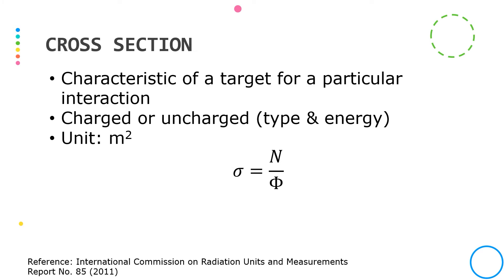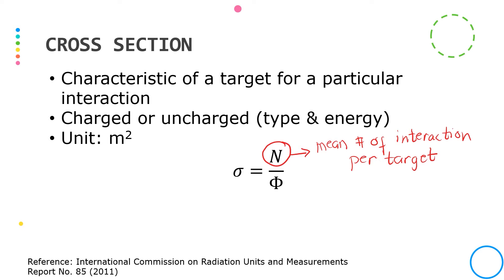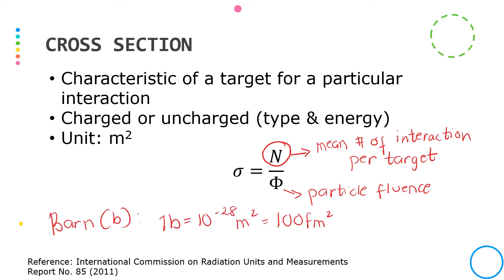A fundamental quantity for radiation interaction is cross-section, denoted by the symbol small sigma. This is a characteristic of a target for a particular interaction produced by charged or uncharged radiation of a given type and energy. It is described by the quotient wherein N is the mean number of such interactions per target subjected to the particle fluence phi. Note that particle fluence is the number of particles per area dA. A special unit for cross-section is barn, where one barn equals 10 to the negative 28 square meters.